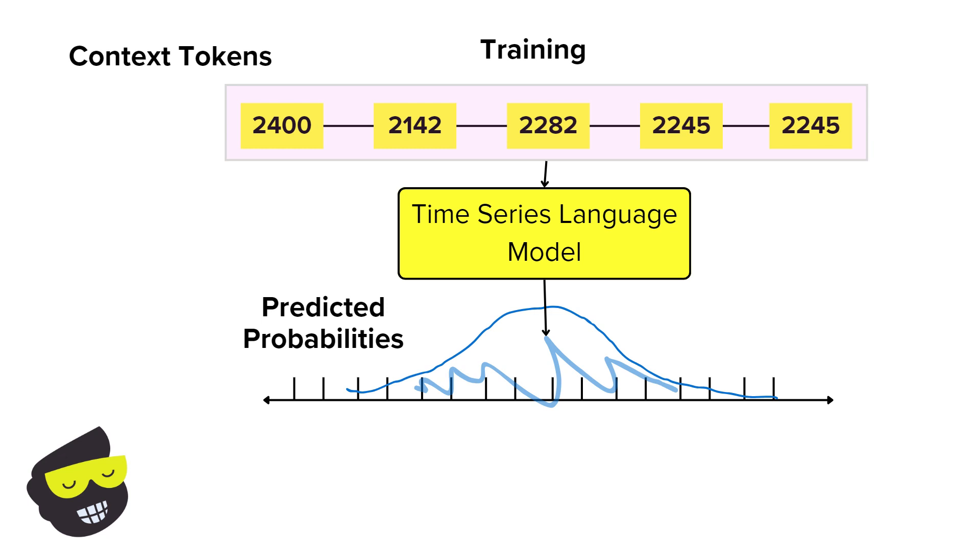For instance, if our tokens are 2400, 2142, 2282, the model calculates how probable it is that the next token would be either 2245, 2310, or any other possible token. In other words, we have our sequence of tokens, and the model is going to predict what is the most likely token that comes next.